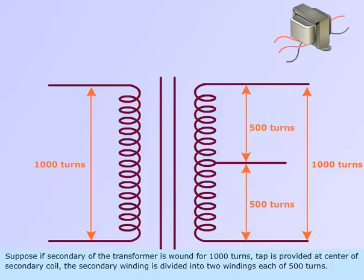Suppose if secondary of the transformer is wound for 1000 turns. Tap is provided at center of secondary coil. The secondary winding is divided into two windings, each of 500 turns.